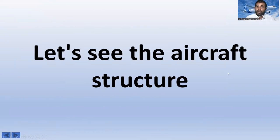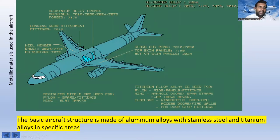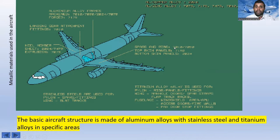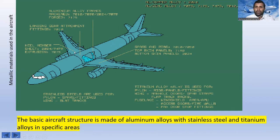Now let's look at the aircraft structure. Regarding metallic materials used in the aircraft: in the wing area, the spars and ribs are made of 7010 and 7050 aluminum alloy. The top and bottom skin panels, aluminum alloy frames, and machined forged landing gear attachment fittings also use 7010 alloy. The keel beam sheet uses 2024, 7475, and extrusions. You can go through this picture — the basic aircraft structure is made of aluminum.